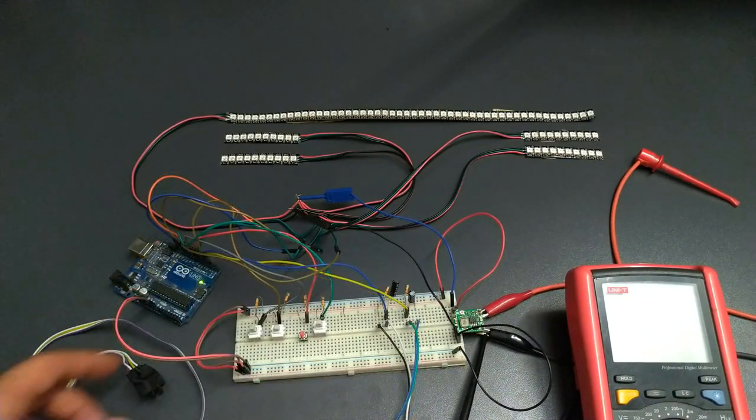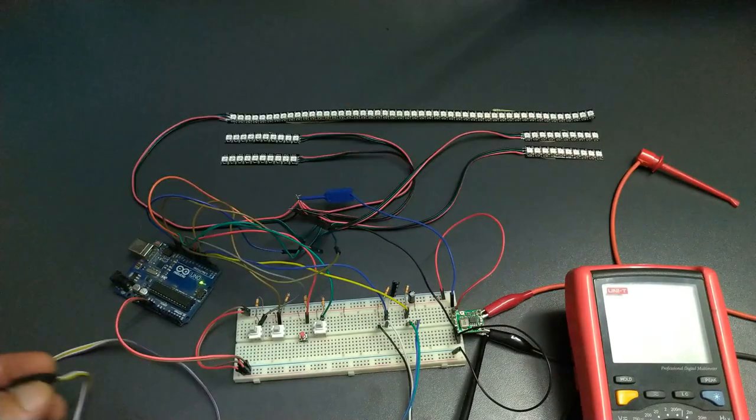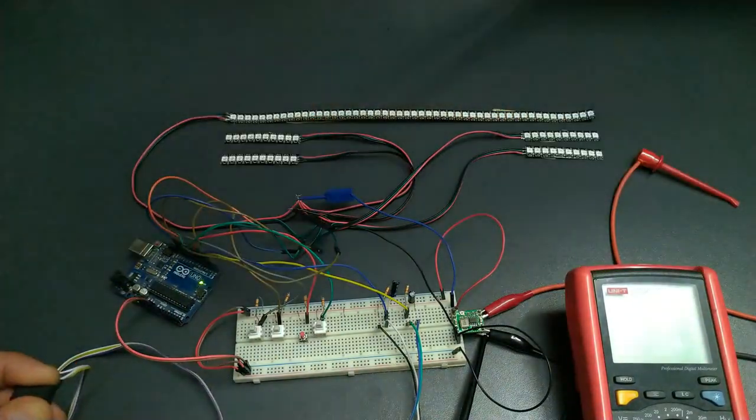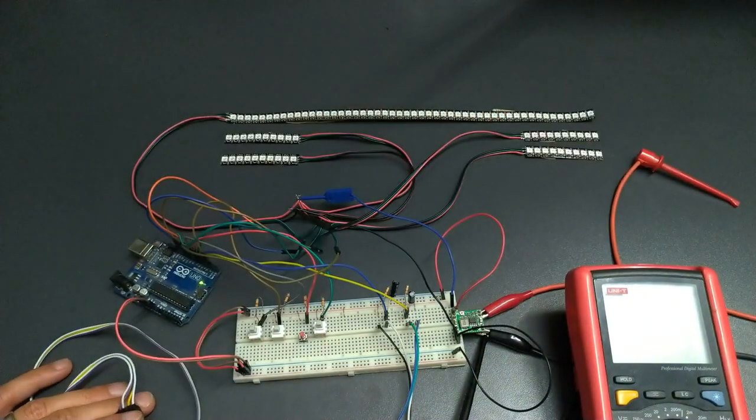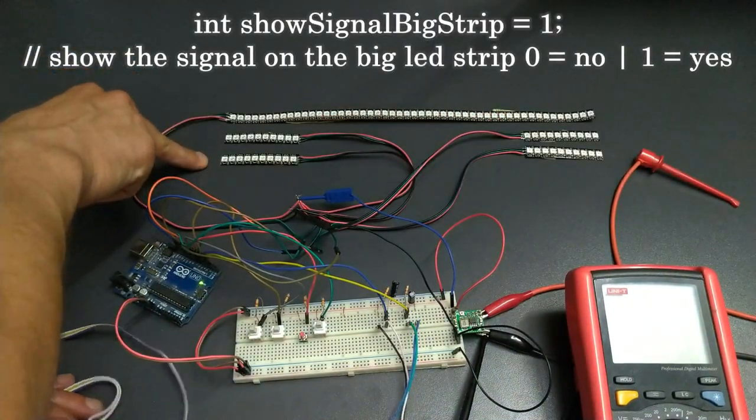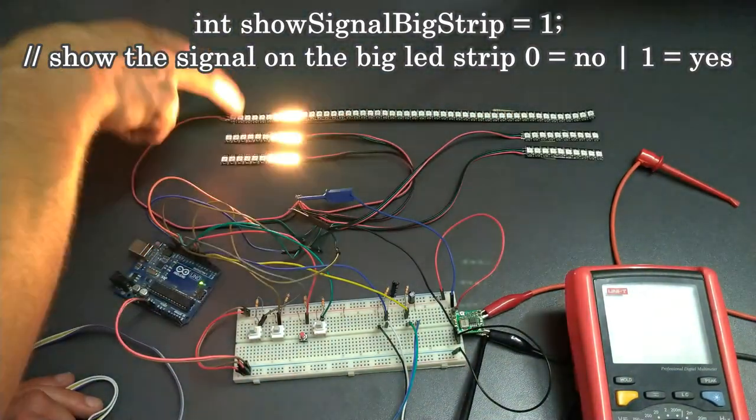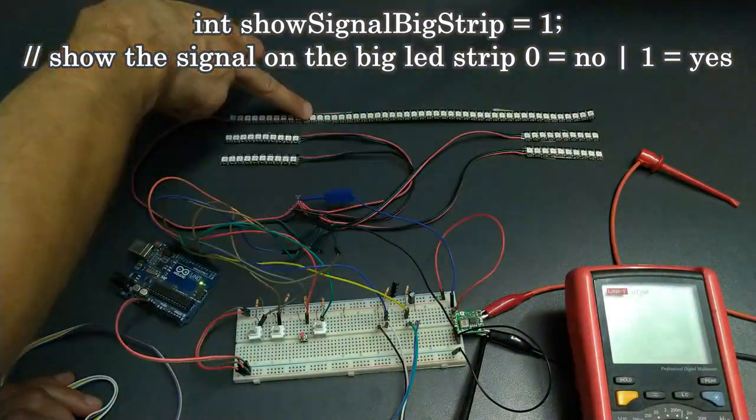So let's see what we have: left signal, right signal, hazard lights. You have the option in the code to change if the signal will show up or not in the big strip.